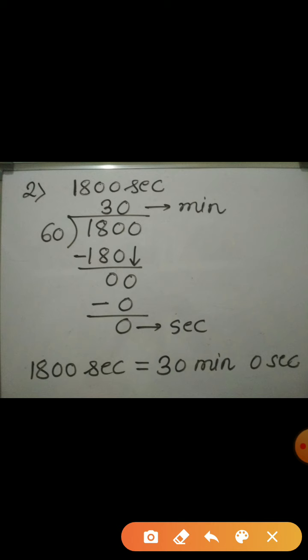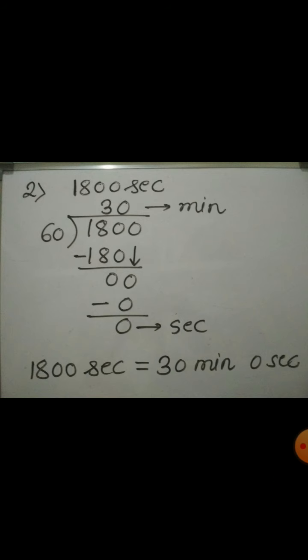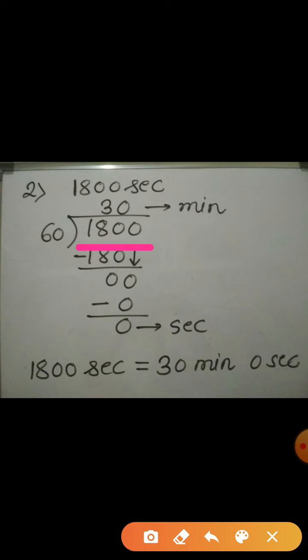Now, see the second example. Here, the time is given 1800 seconds. To convert the number of seconds into minutes, again we have to divide 1800 by 60.